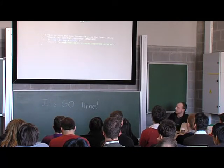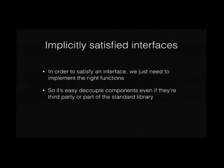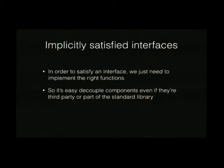That's an example from the standard library for the default format for printing a timestamp. In Go, you pass in a format string rather than the actual format statement. What makes interfaces a little bit more interesting in Go is that they're implicitly satisfied — you don't have to declare that a type implements an interface. It happens just by virtue of implementing the right functions, the right method set.